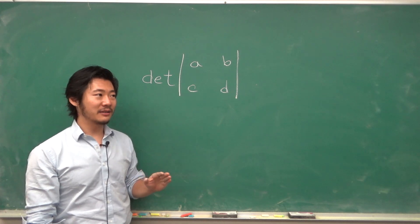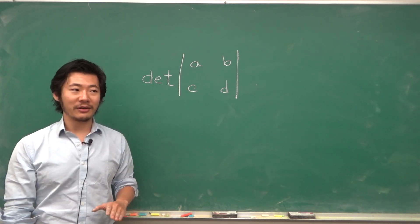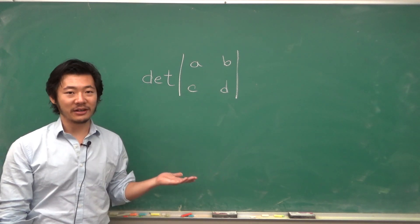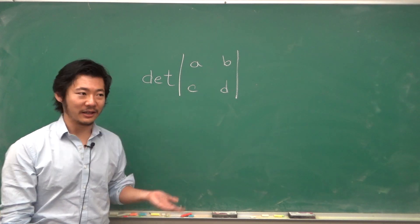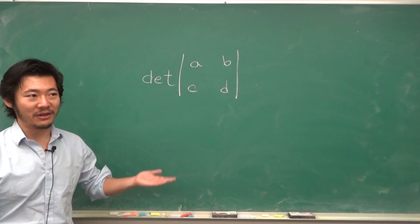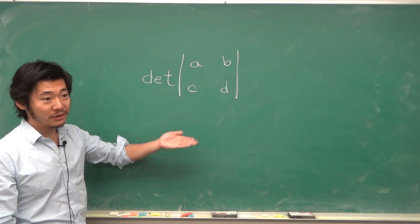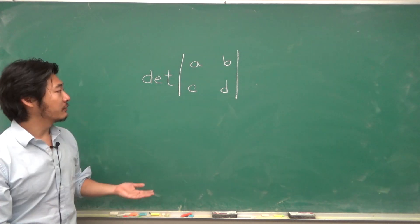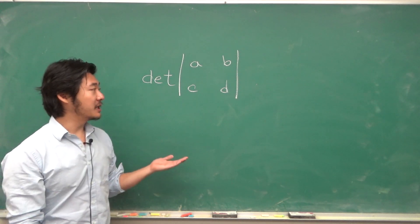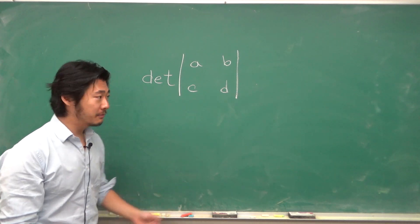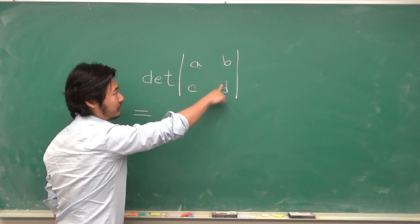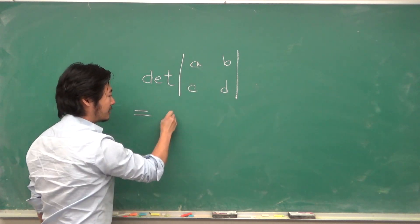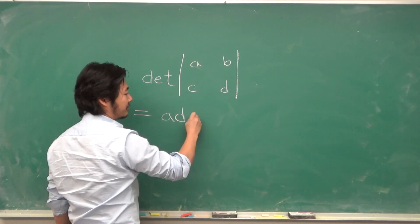It doesn't really make sense to talk about determinants of matrices that aren't square, like a 3 by 7 or something. So only 2 by 2s, 3 by 3s, etc. The determinant of a 2 by 2 is just that you multiply across: a times d minus b times c.